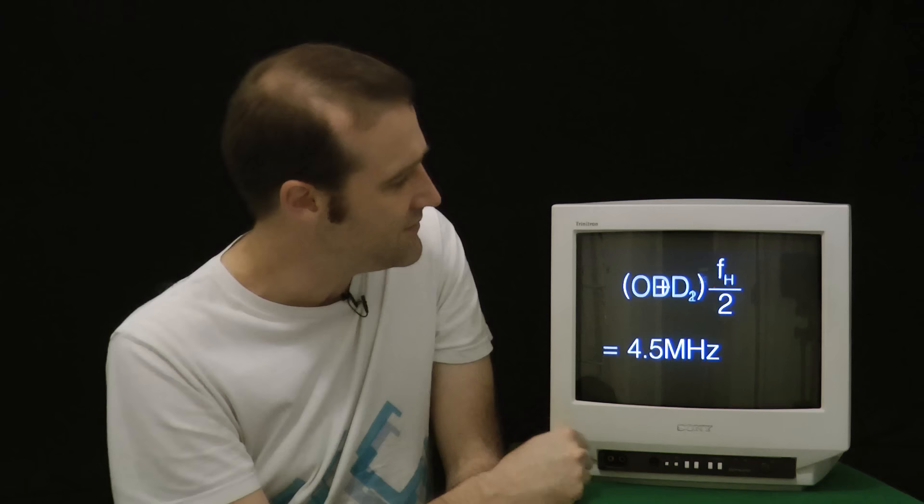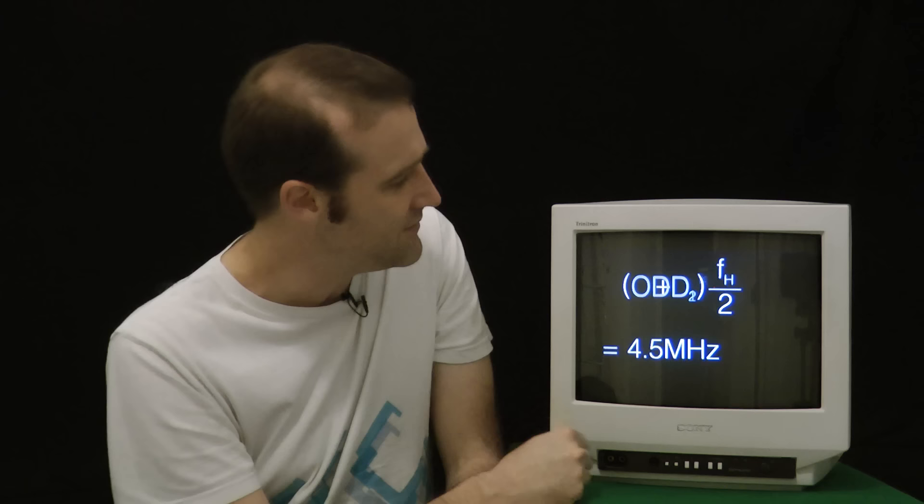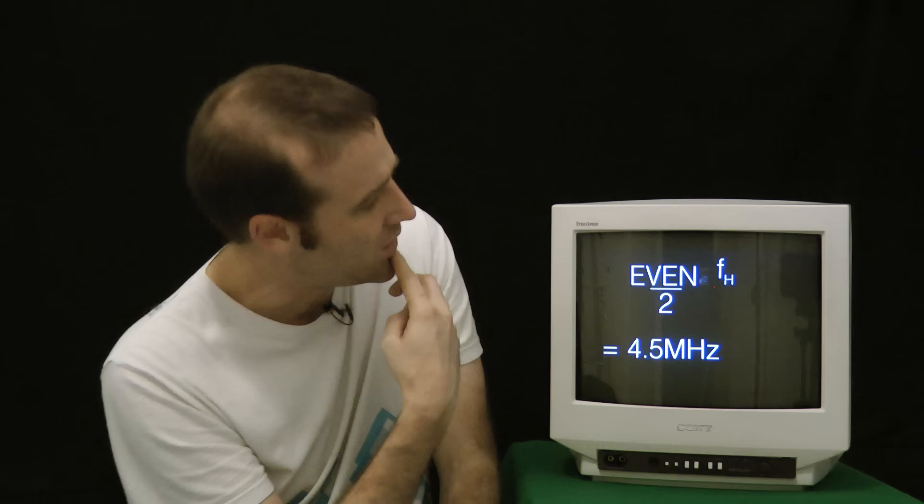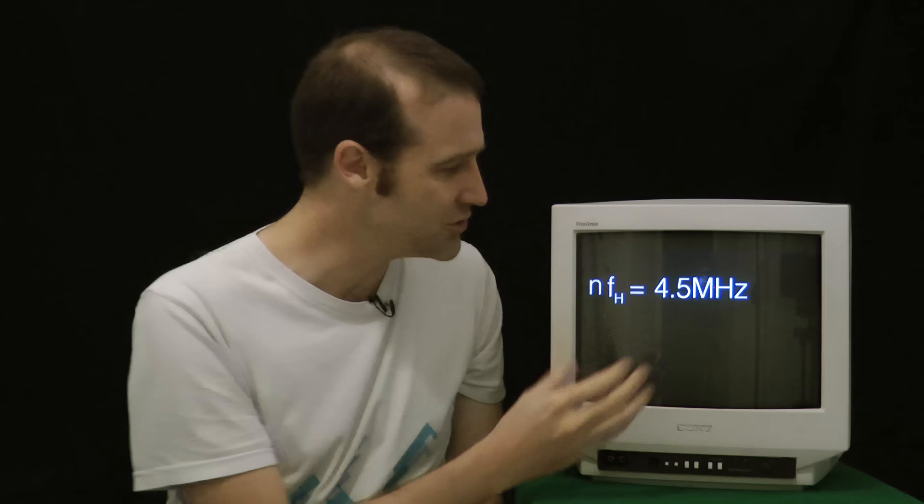Well, we know if you're adding two odd numbers together, you're going to get an even number out the other side. We can move the half over there. And if you half any even number, you're just going to get some integer. And so the moral of the story is that we need an integer multiple of the horizontal frequency to equal our total interval of four and a half megahertz, which is, of course, just 4,500,000.